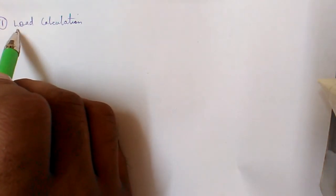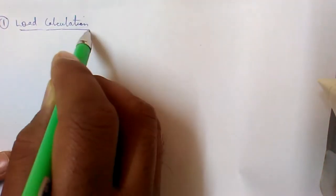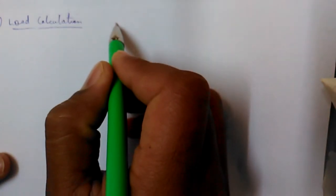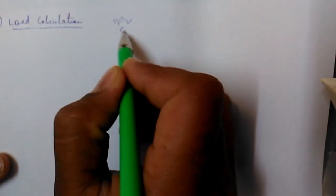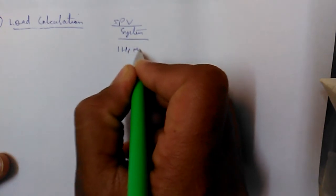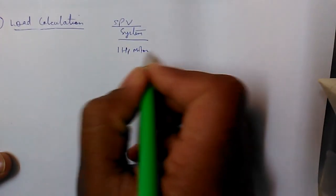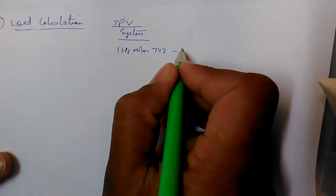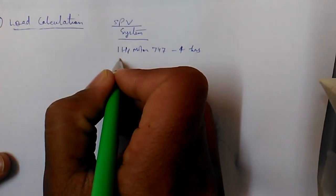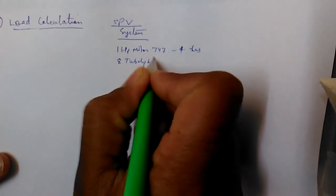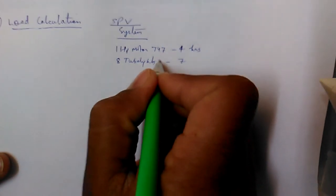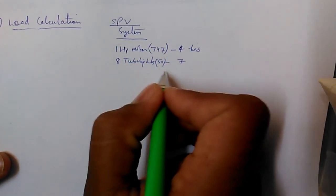We have been given a question: how to design an SPV (Solar Photovoltaic) system. We have given one HP motor of 747 watts operating for four hours, and eight tube lights operating for seven hours at 50 watts each.